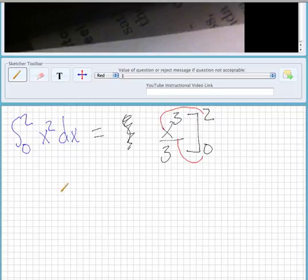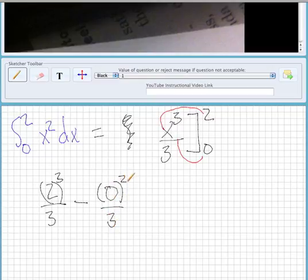So what it's going to look like is 2 cubed over 3 minus, so we plugged in 2, and then we're plugging in 0 into that same function right there.